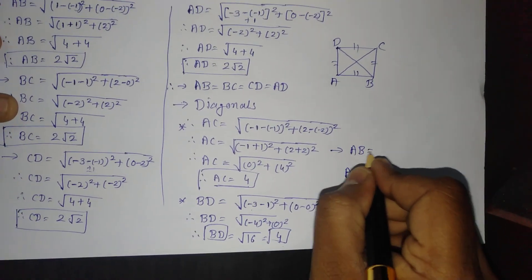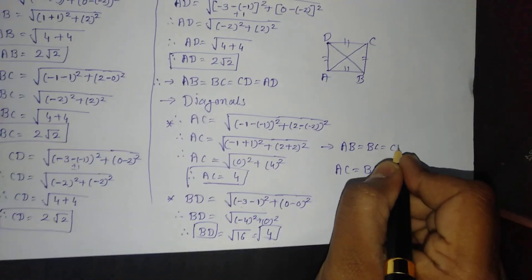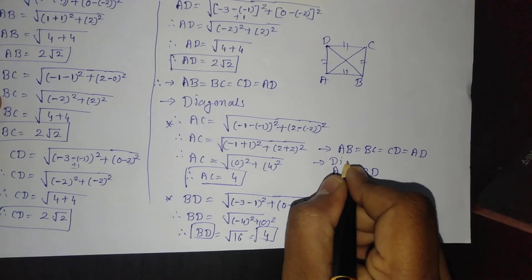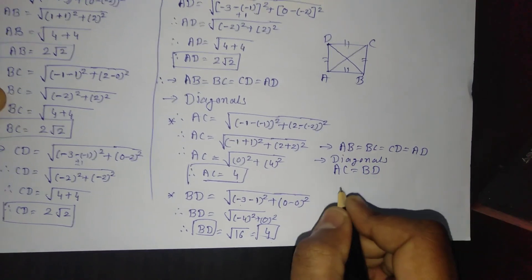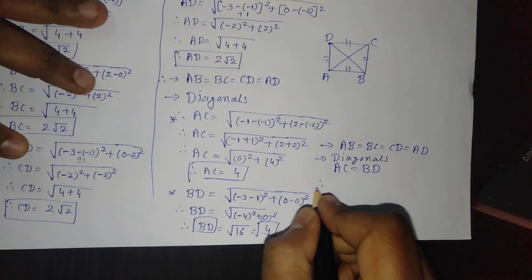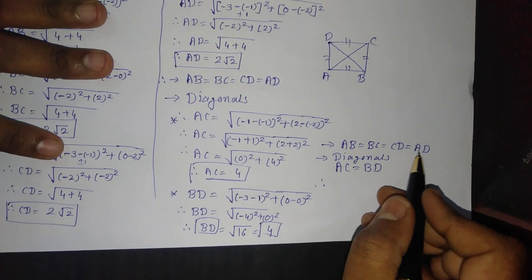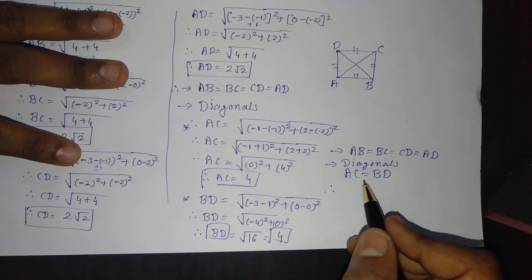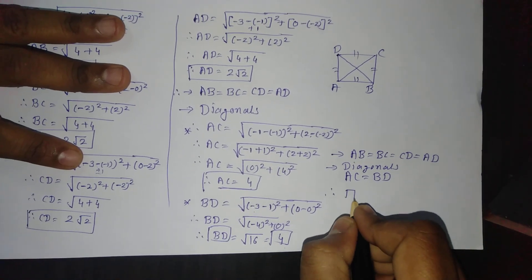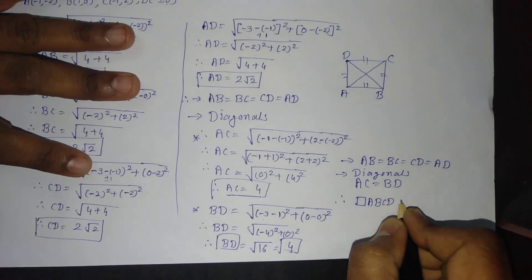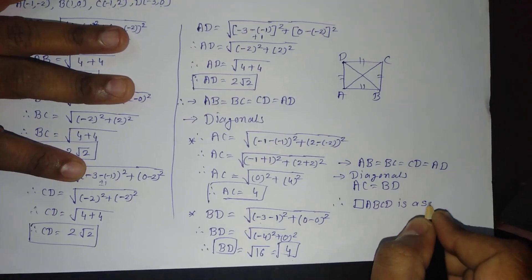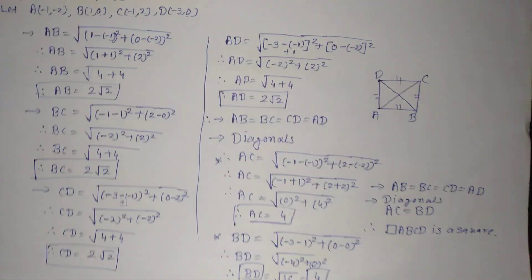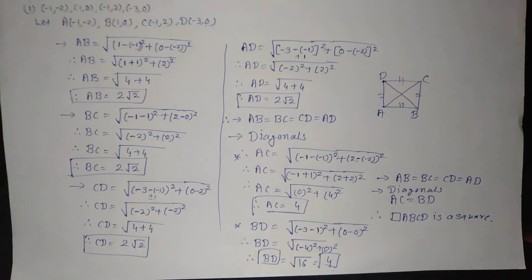So we got that AB = BC = CD = AD (all sides equal) and also the diagonals AC = BD. Therefore we can say that if the sides of the quadrilateral are of equal measure and the diagonals are also equal, then quadrilateral ABCD is a square. If you really like this video, click on the like button and share with your friends, and for further updates subscribe to my channel. Thank you.